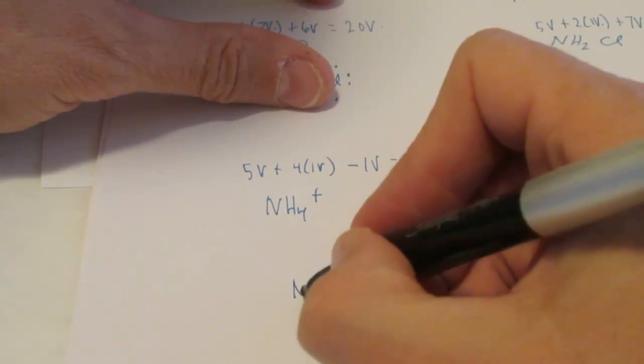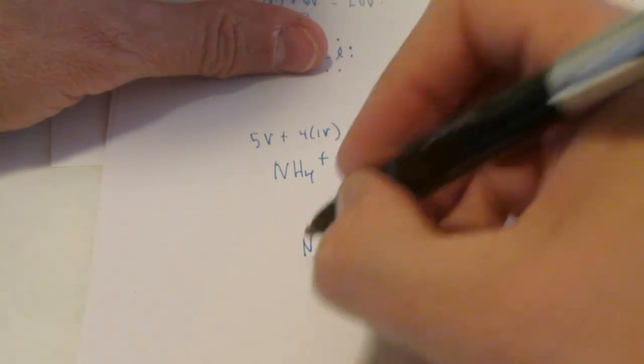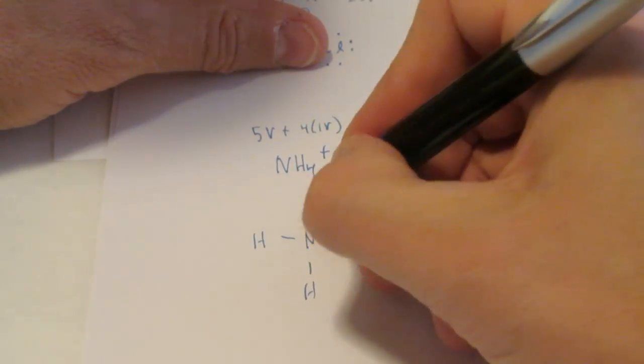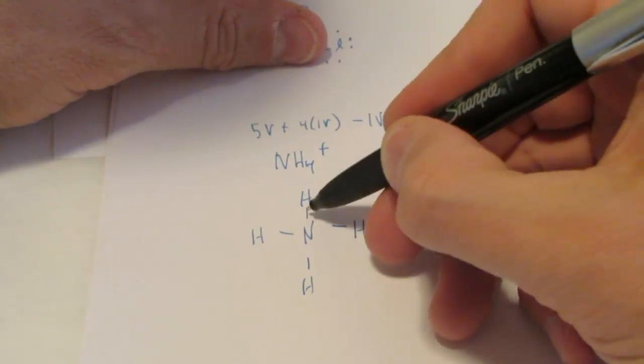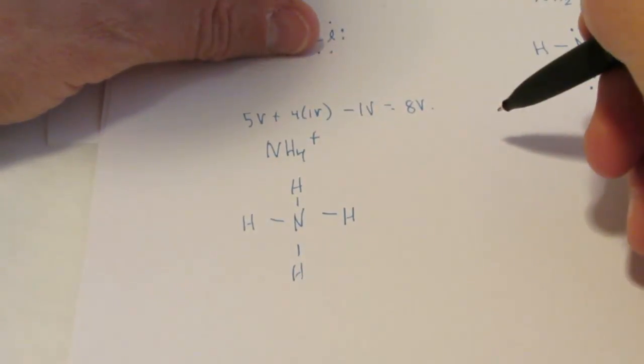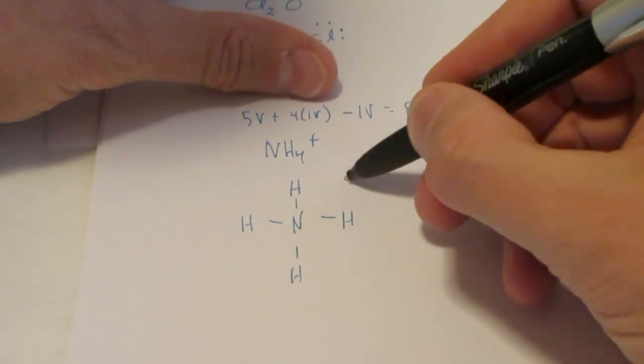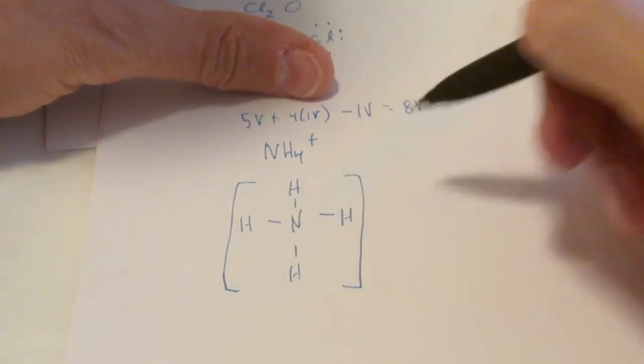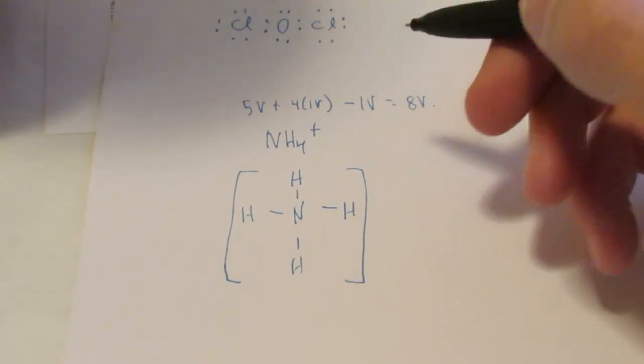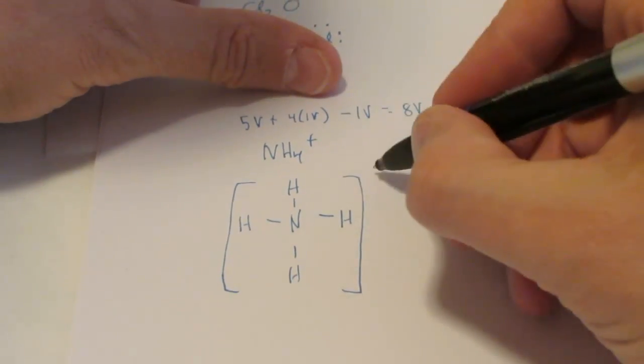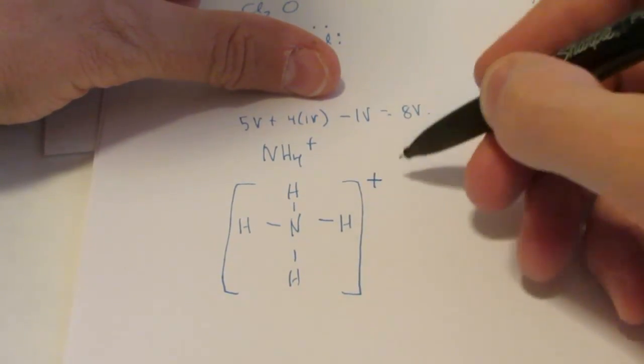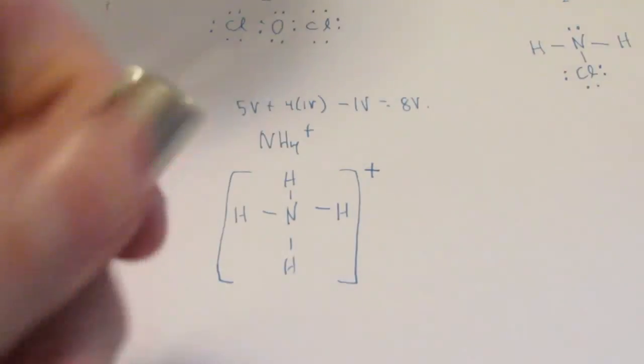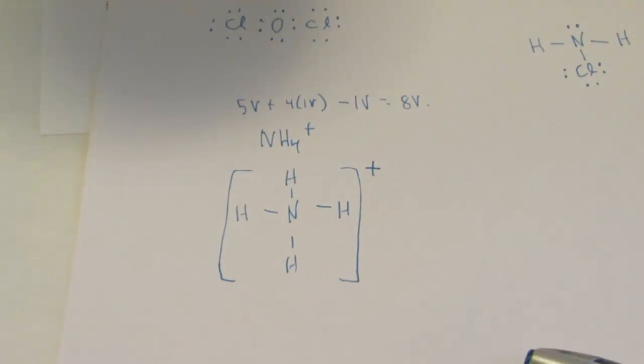Put nitrogen in the middle. Then we'll put a hydrogen on each of the four sides. That makes sense. That's nice and pretty and symmetrical. I've used two, four, six, eight. And I've got it. Now, for an ion, we put that in brackets so the reader understands that it's not neutral, that we've had to either add or take away electrons. In this case, it's a positive one charge. We took away an electron, so we put the charge on the outside. So that's the good little structure for the ammonium ion, NH4 plus.